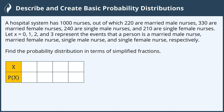Find the probability distribution in terms of simplified fractions. Since this states respectively, that means x = 0 coordinates with the first event — a married male nurse; x = 1 coordinates with the married female nurse; x = 2 is a single male nurse; and x = 3 is a single female nurse.